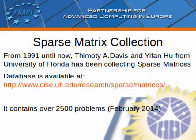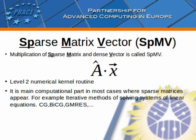On the official website of the University of Florida, we can find a sparse matrix collection, which is interesting both in terms of the number of collected matrices and their real-life applications. Sample matrices from this source will be used in further analysis. The multiplication of a sparse matrix and a dense vector is called SPMV. Following basic linear algebra subroutine terminology, SPMV is a second-level numerical operation according to its numerical complexity, and is the main computational part in most cases where sparse matrices appear.